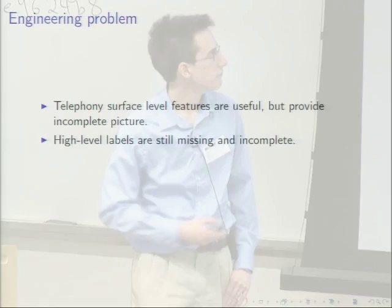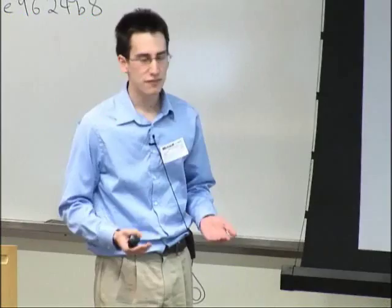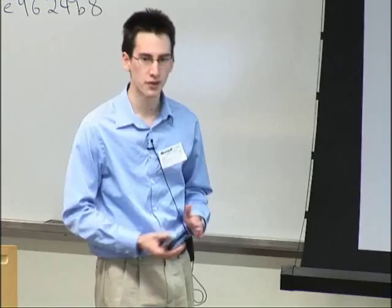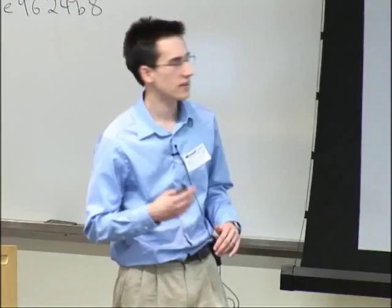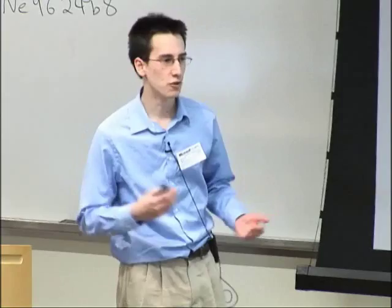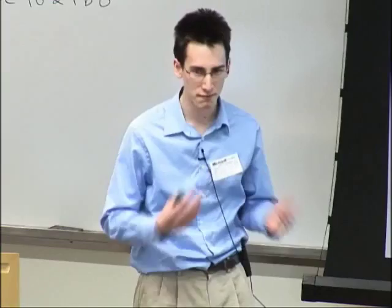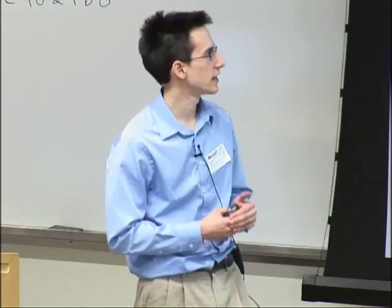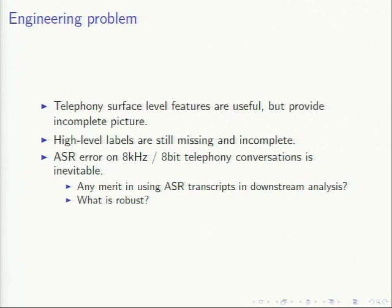The telephony surface records provide useful information: what number they called, how often, letting us develop social networks from this data. Unfortunately, many high-level labels are still missing — are they calling family members or friends? Is it formal business communication or social chit-chat? That's what we're really trying to get at from the clinical side. ASR error is significant in this open domain, so we're asking: what is the sensitivity of downstream analysis to this error? What features are robust? What inferences can we still make?